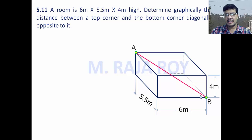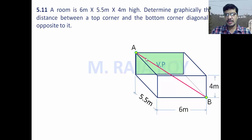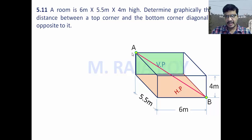AB you can consider as a line, and the true length of this line is our target. For this room, consider this wall as the vertical plane and this floor as the horizontal plane. The x-y line is the intersection of HP and VP.